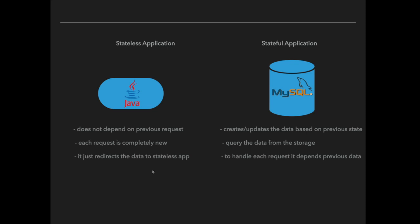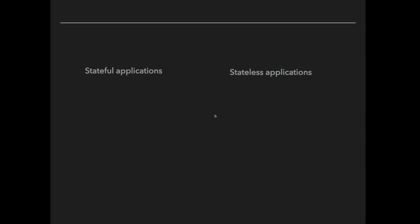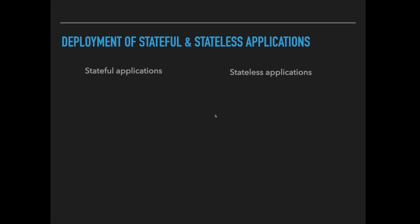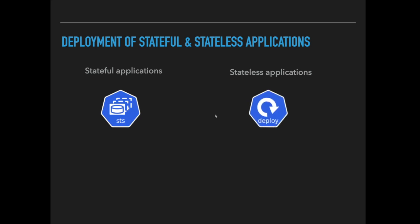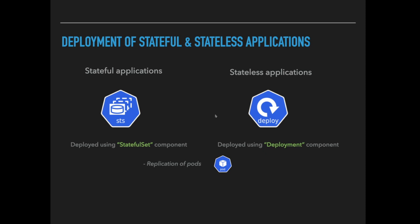To handle each request, a stateful application depends upon previous data. For example, when a user sends a request to a stateless application like a Java application, the Java application redirects that request to the stateful application. The stateful application queries the data from storage and gives the response back to the stateless application. Because of these differences, both applications are deployed using different components: stateful applications using the StatefulSet component, and stateless applications using the deployment component. Both manage replication of pods in the same way, and data persistence and persistent storage configuration are also done in the same way.